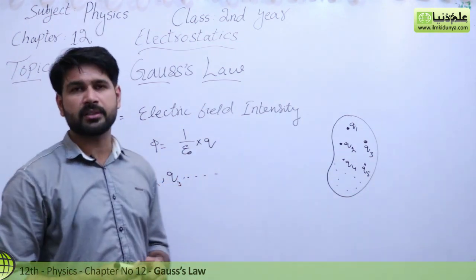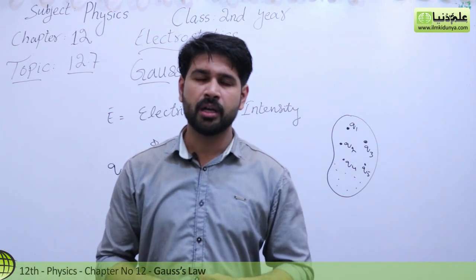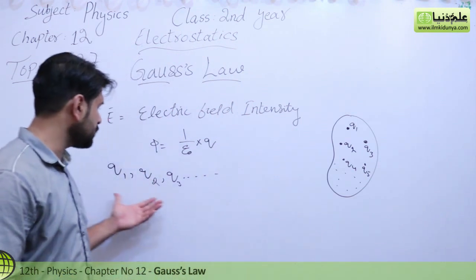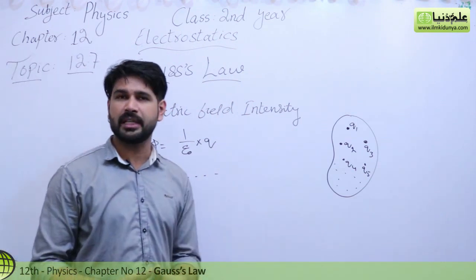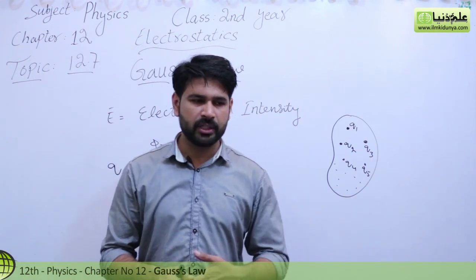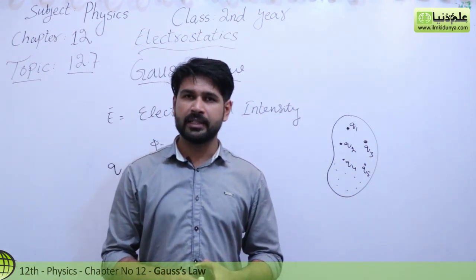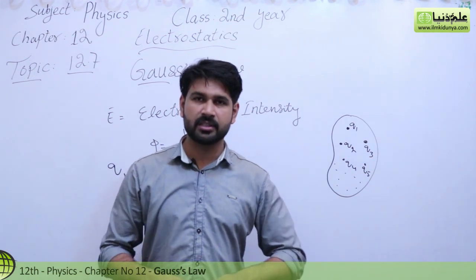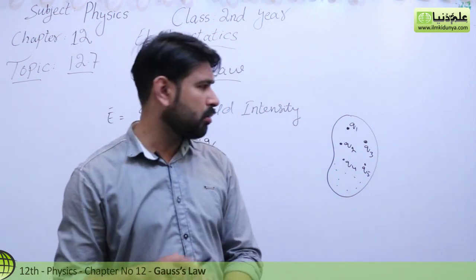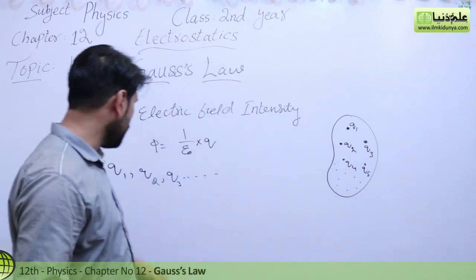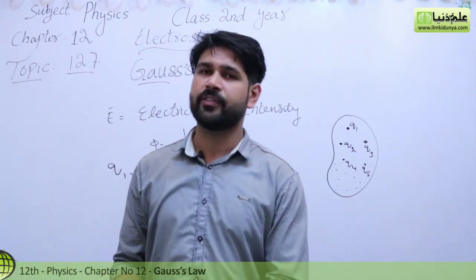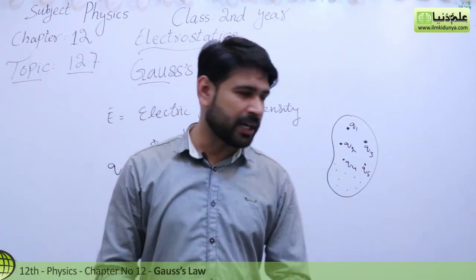Now let's see what will be the result of distributing a number of charges inside a body. If a body encloses a lot of charges, what will be the electric flux and what will be the electric field intensity? In the previous section we studied about a single charge — what the electric flux is if a body encloses a unit positive charge. So now how can we find out the resultant electric flux through that body?